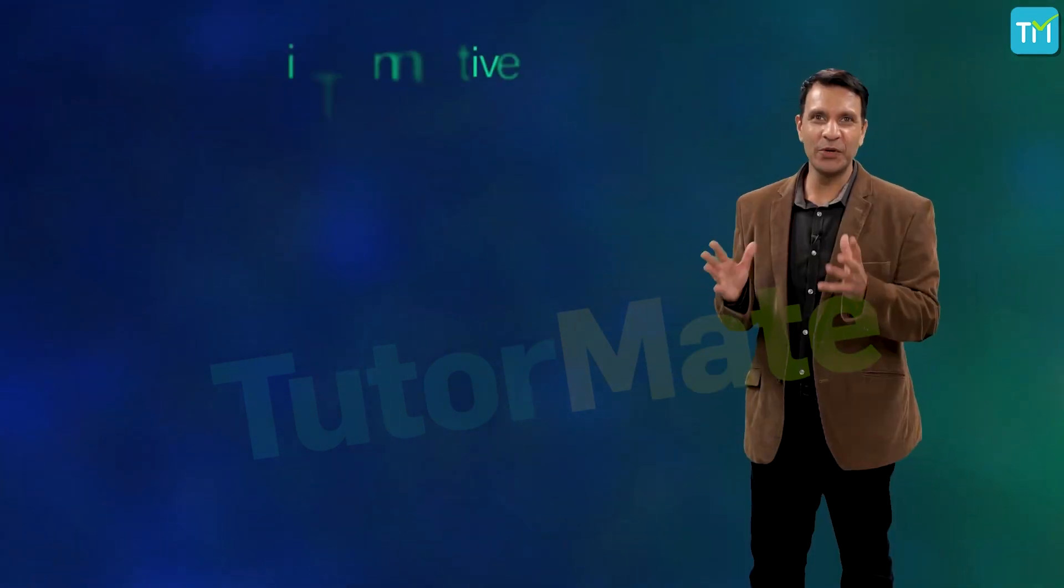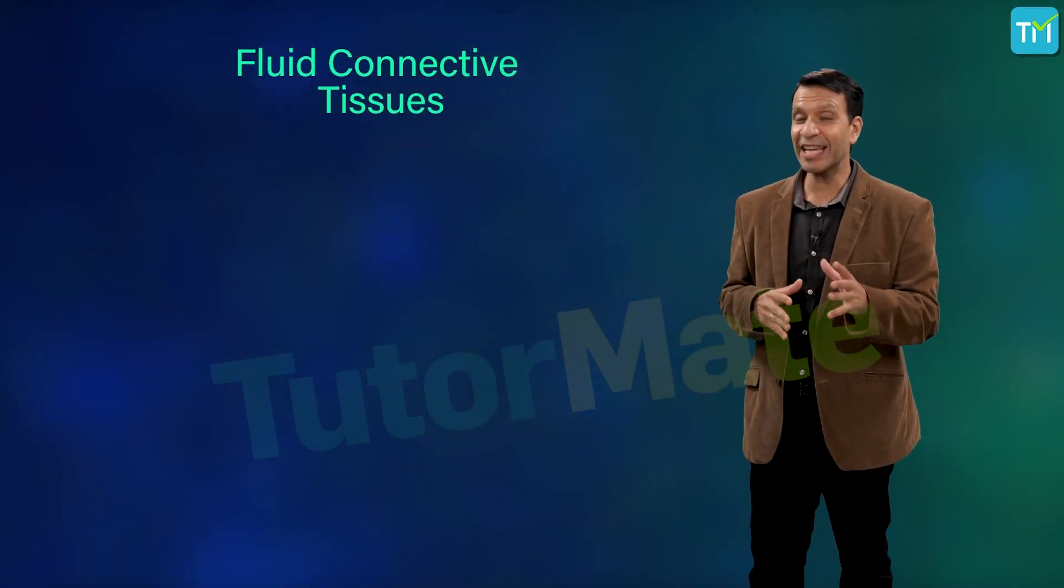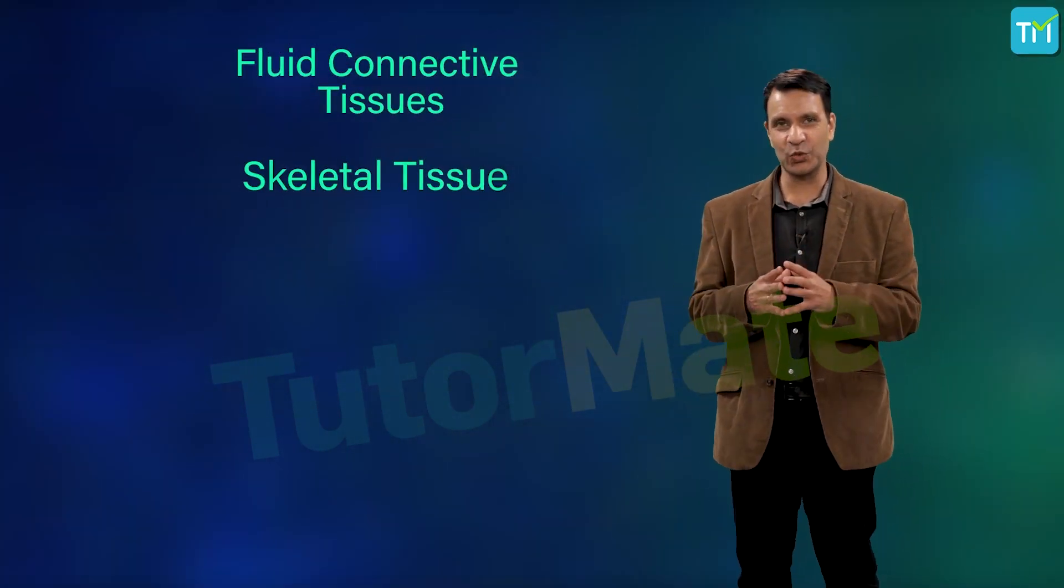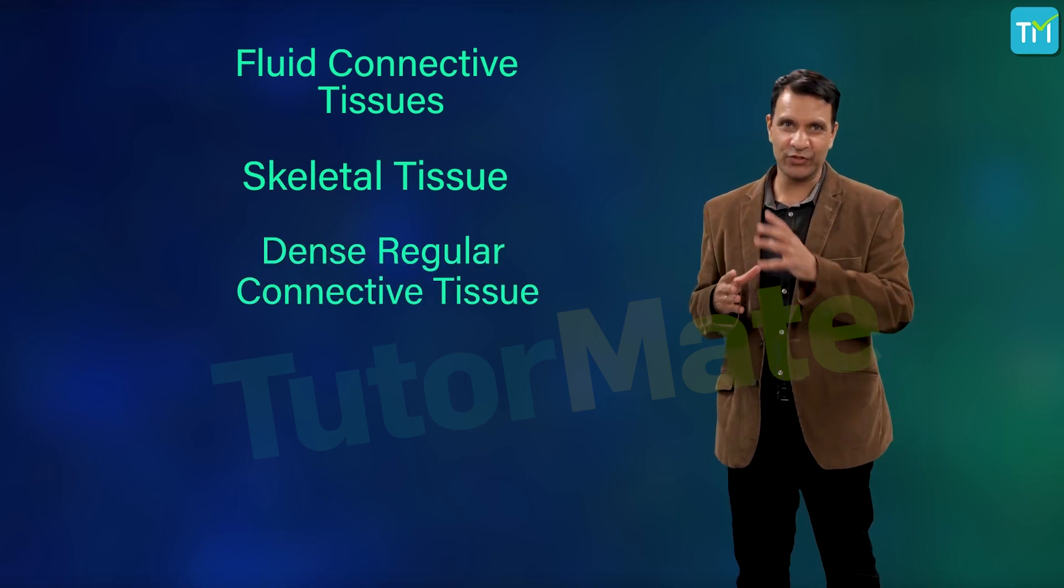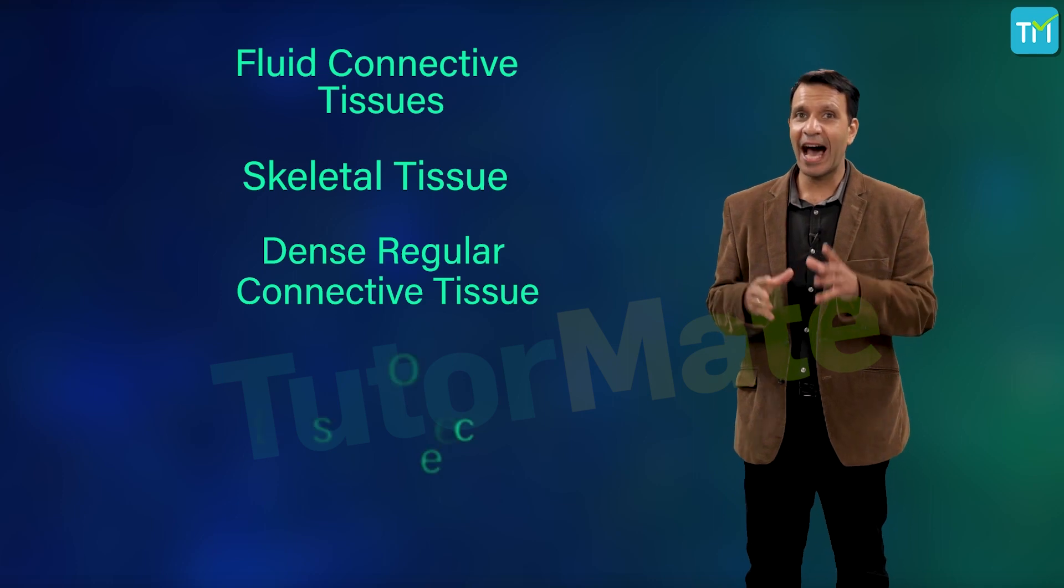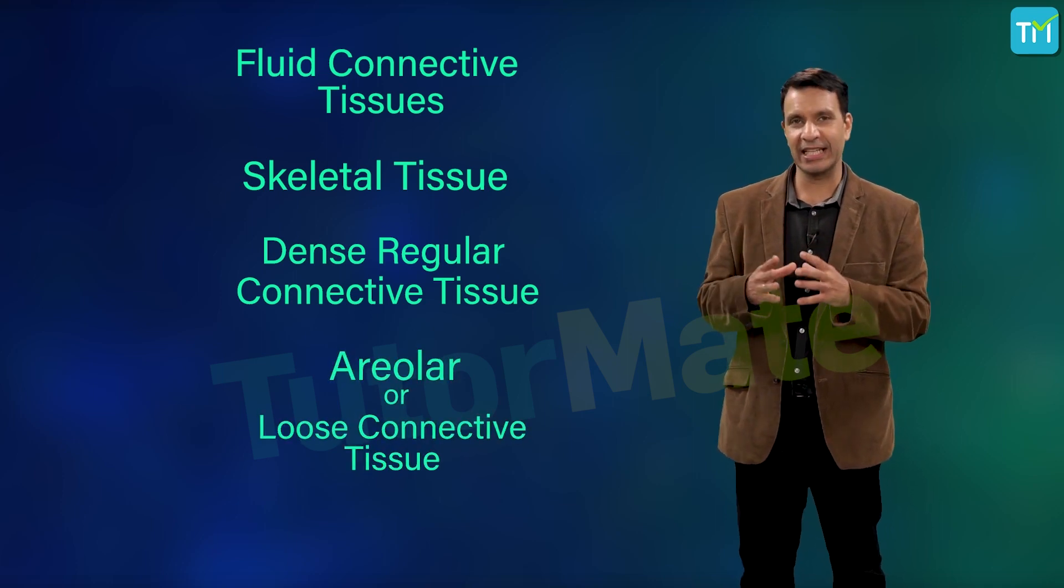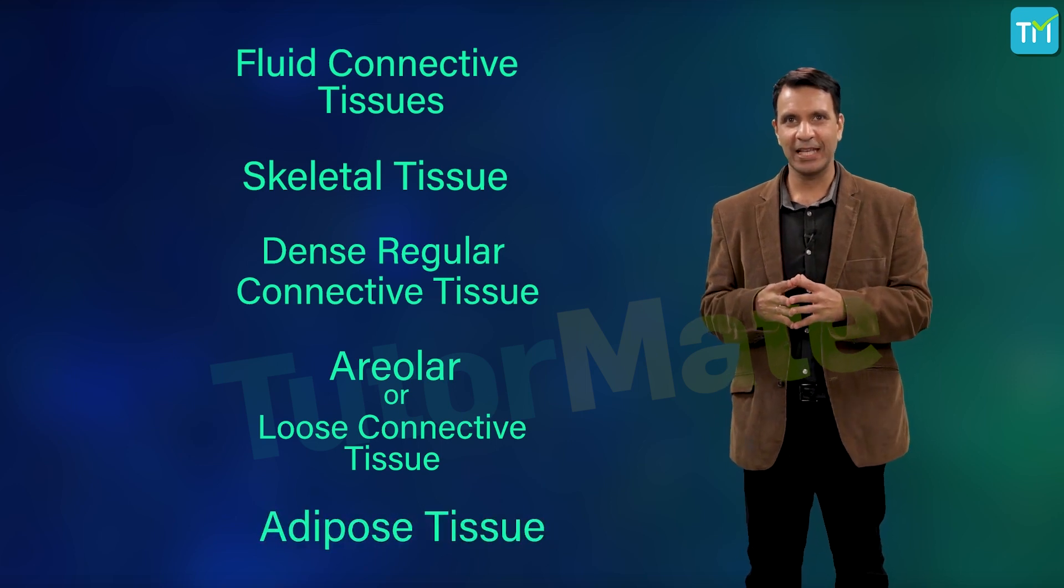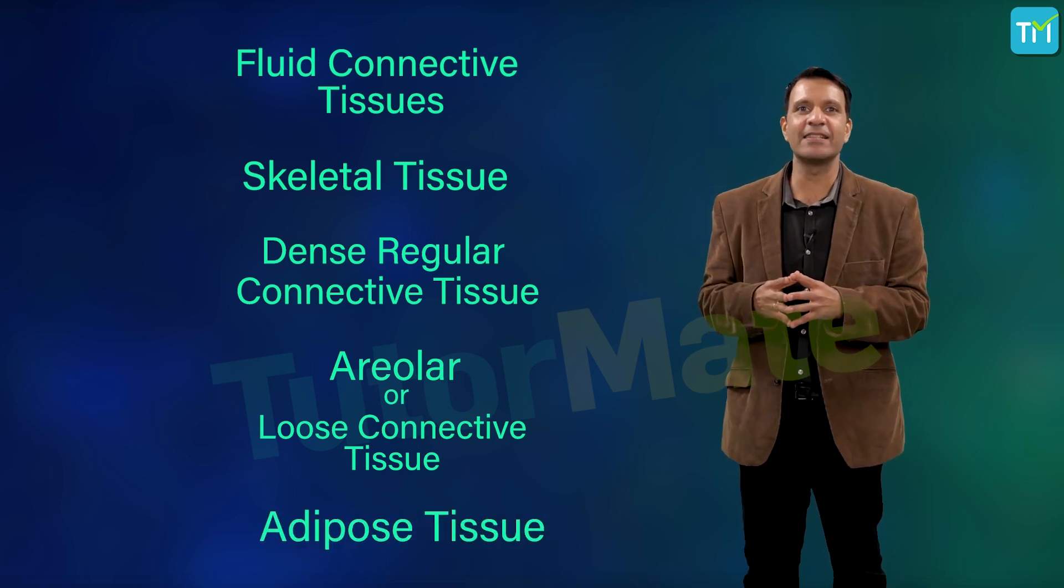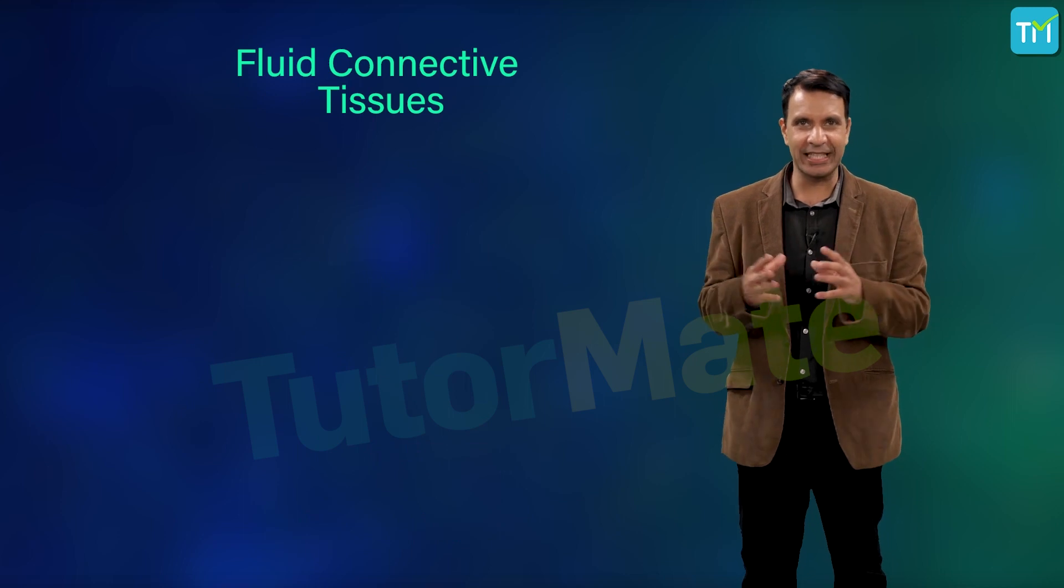In animals, there are five types of connective tissues: first, fluid connective tissues; second, skeletal tissue; third, dense regular connective tissue; fourth, areolar or loose connective tissue; and finally the fifth, adipose tissue. Let me tell you about them in detail, starting with the fluid connective tissues.